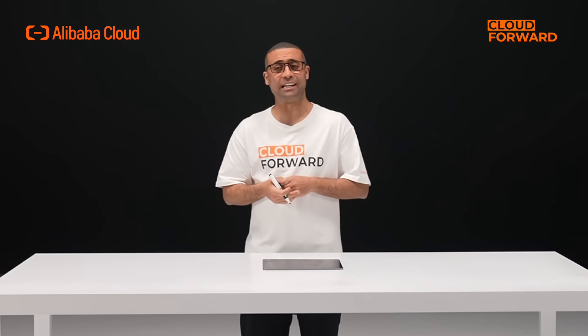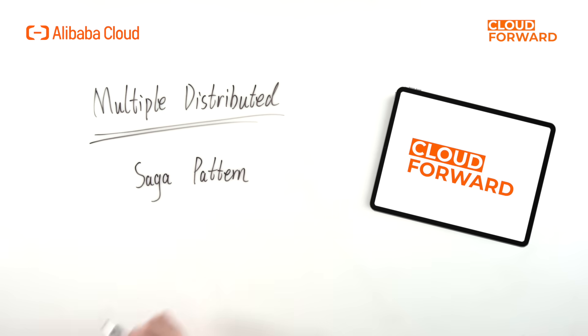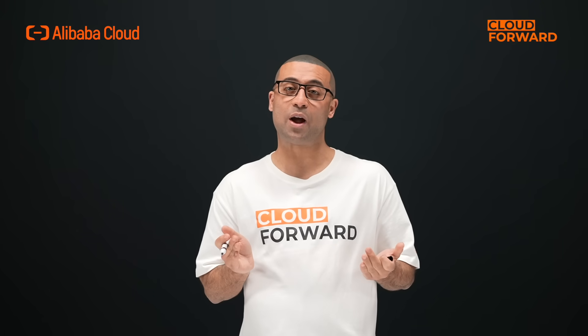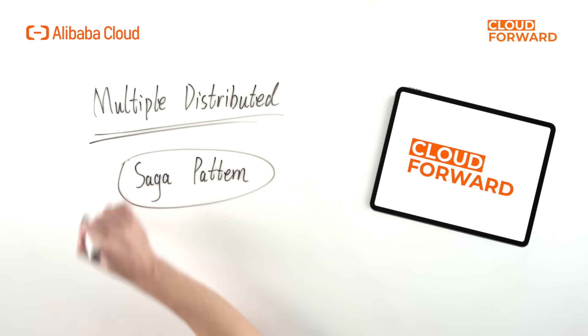Let's take a look at a core scenario in e-commerce: the order process. This scenario involves multiple distributed problems, which is the most troublesome issue caused by the introduction of microservice architecture. A monolithic application can handle this process to some extent, because it uses a single database and can maintain data consistency through database transactions. However, in reality, it is necessary to interact with some external services, and a certain mechanism is required to ensure the smooth progress and rollback of the process.